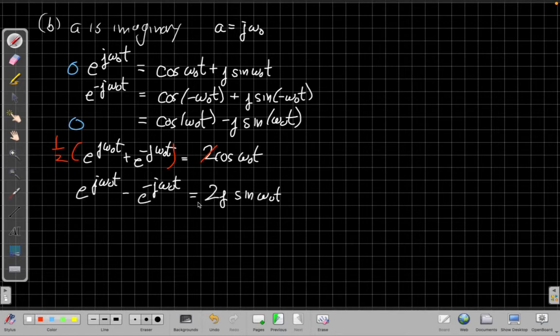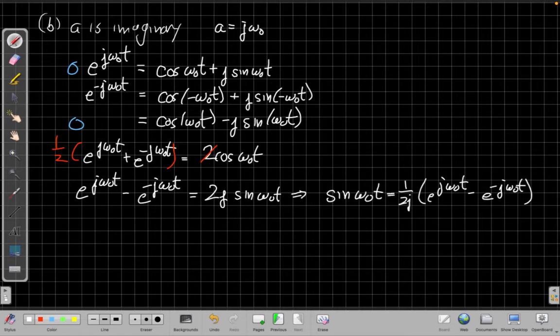So looking at this, then I can say, oh, all I need to do is divide both sides by 2j, and I'll get my equation for sine. So that's my Euler's identity for sine. Those are just a refresher on our old friends from Euler's.